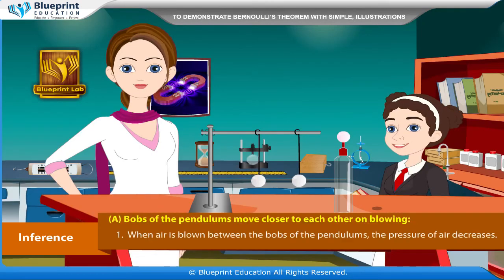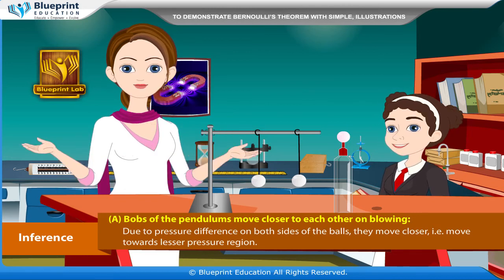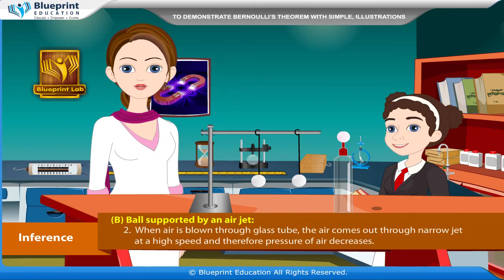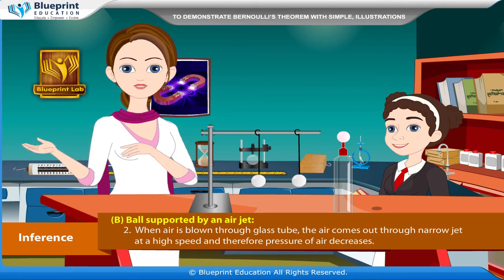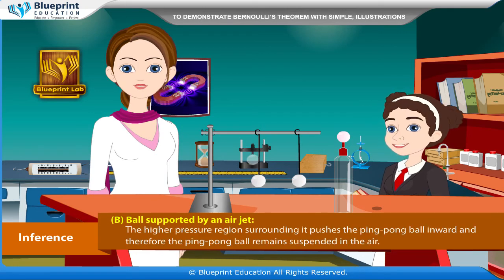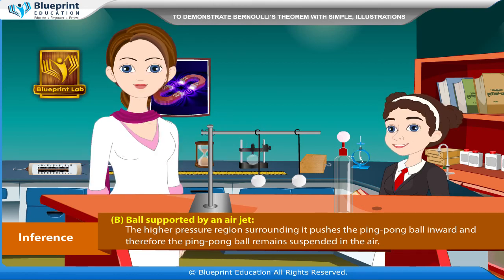Inference: When air is blown between the bobs of the pendulums, the pressure of air decreases. Due to pressure difference on both sides of the ball, they move closer — that is, they move towards the lesser pressure region. When air is blown through the glass tube, the air comes out through the narrow jet at a high speed and therefore pressure of air decreases. The higher pressure region surrounding it pushes the ping pong ball inward and therefore the ping pong ball remains suspended in the air.